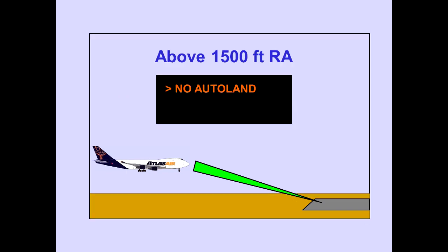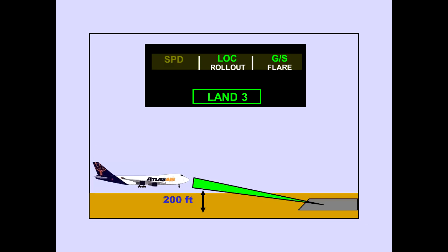Above 1,500 feet radio altitude, the ICAS advisory message NO LAND indicates that two or three autopilot systems have failed. In a LAND 3 condition below 200 feet radio altitude, the loss of one autopilot will not change the LAND 3 display.